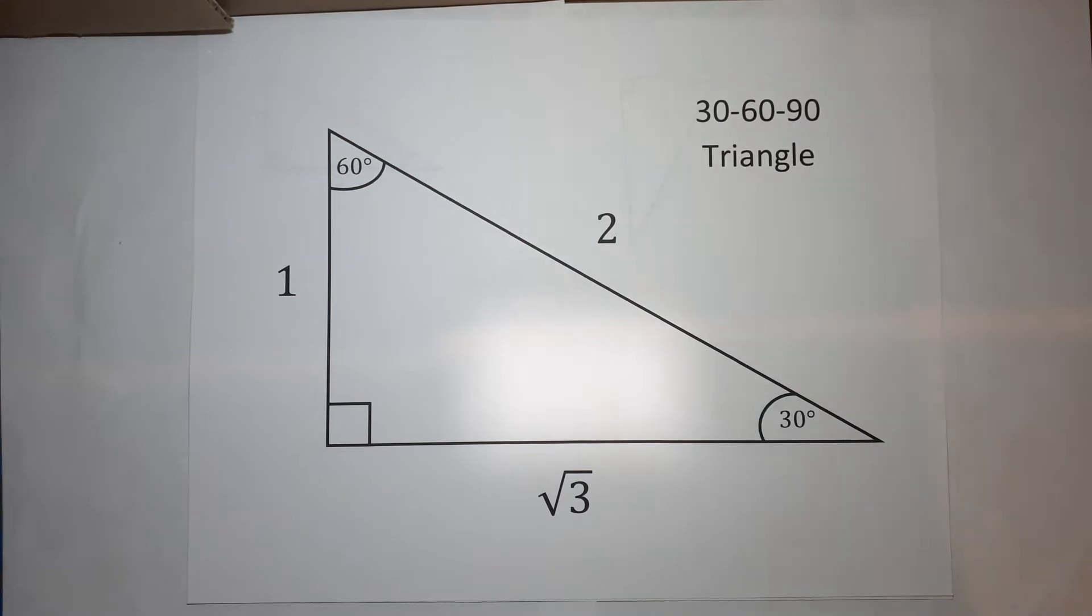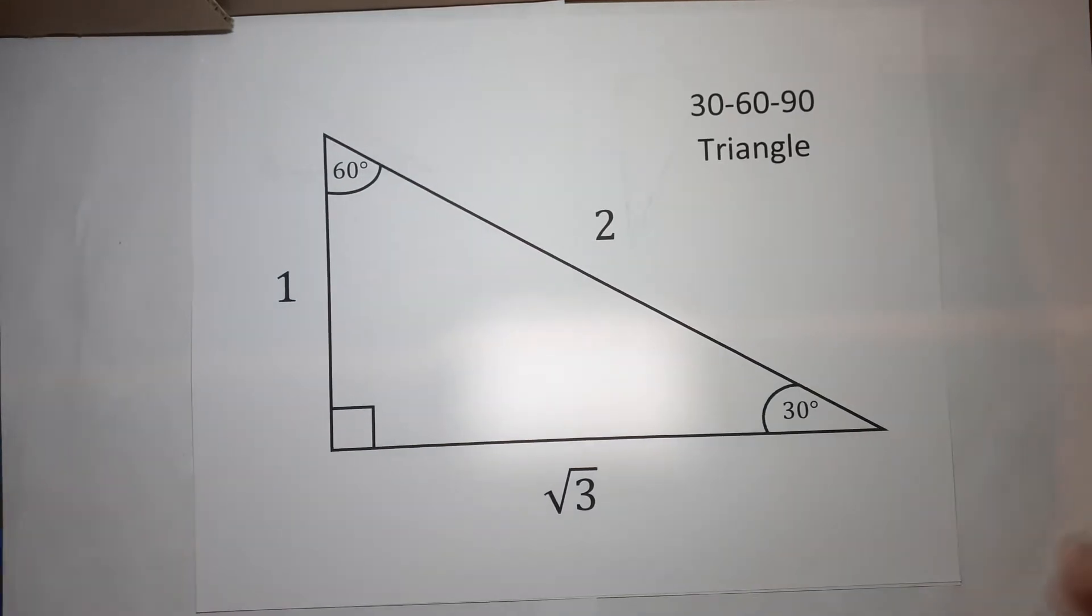30, 60, 90 triangle is another special triangle. The angles of a triangle always add to 180.